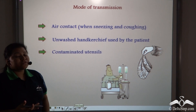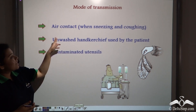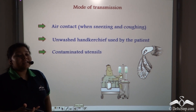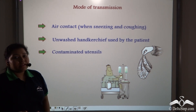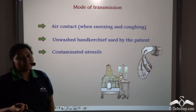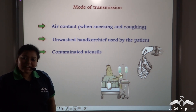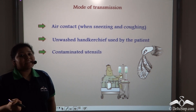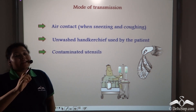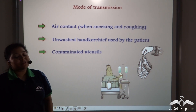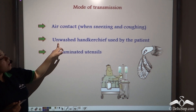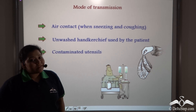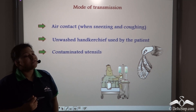The mode of transmission of Mumps is through air contact. When a diseased person sneezes and coughs, the sputum containing the virus gets suspended in the air, and while inhaling, this virus can get transmitted from an ill person to a healthy person. Also, unwashed handkerchiefs used by the patient are another mode of transmission.